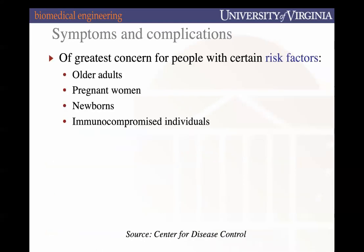The greatest concern is for people with certain risk factors — characteristics of certain populations with higher susceptibility. The populations at risk are older adults, pregnant women, newborns, and immunocompromised individuals. You can think of all of these populations as individuals that are immunocompromised to varying degrees.